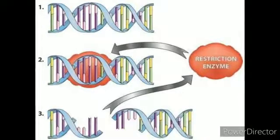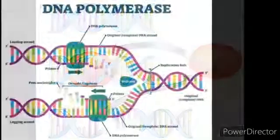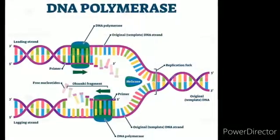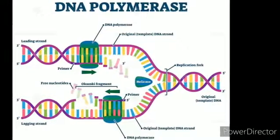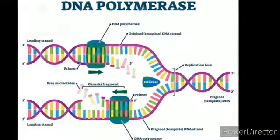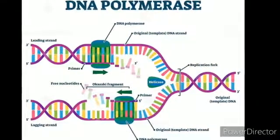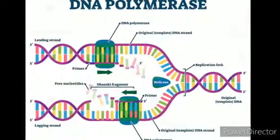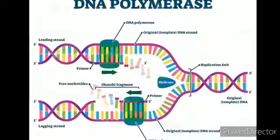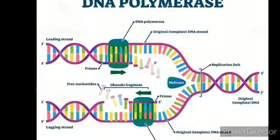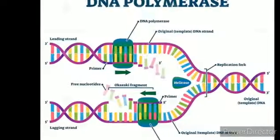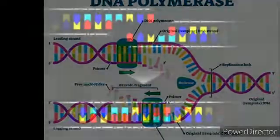This stickiness of the end facilitates the action of enzyme DNA ligase. These enzymes are isolated from bacteria and named with 3 or 4 letter sequences followed by Roman numerals. For example, EcoRI. Today we know more than 900 restriction enzymes that have been isolated from over 230 strains of bacteria.